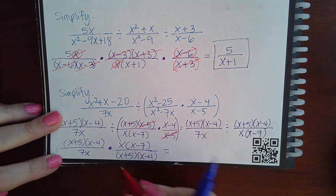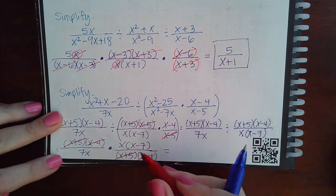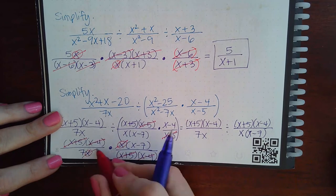And then now I can reduce. So x plus 5 will wipe out. x minus 4s will wipe out. This x and this x will also wipe out.